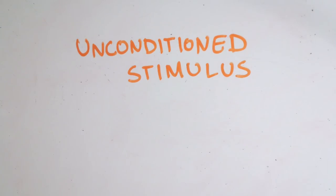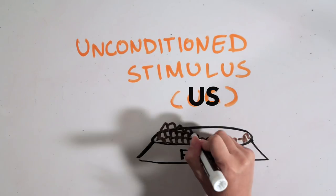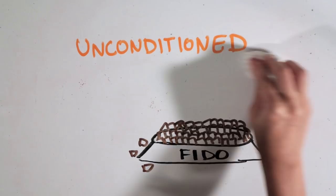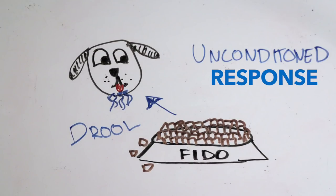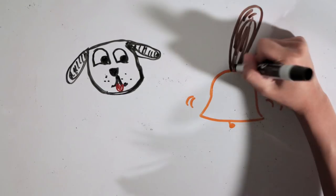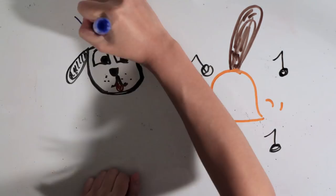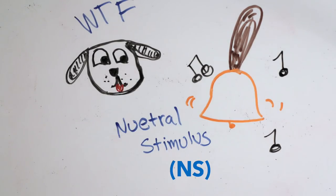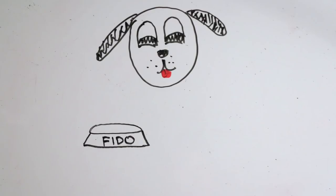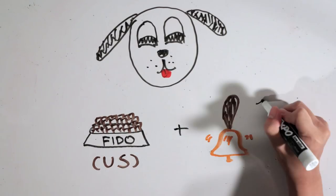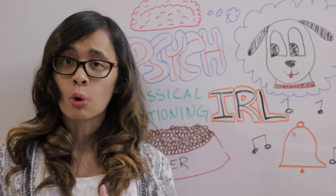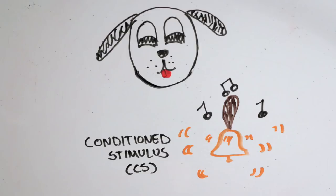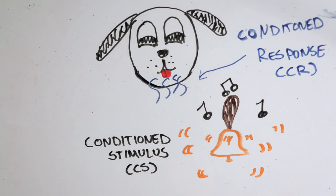Dogs naturally salivate to food — food is an unconditioned stimulus. The dog drooling is the unconditioned response. The sound of the bell is a neutral stimulus, because dogs don't naturally salivate to that. Pavlov presented the sound of the bell and the food together over and over again. After a number of experiments, he just rang the bell — and the dogs salivated to the sound of the bell alone.